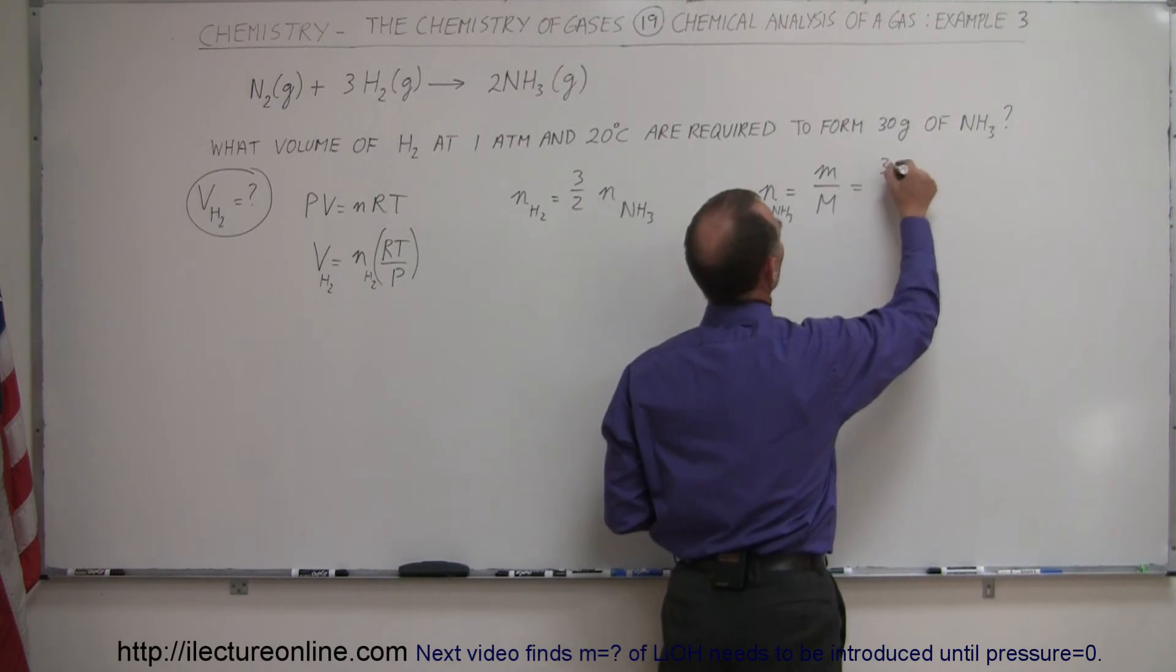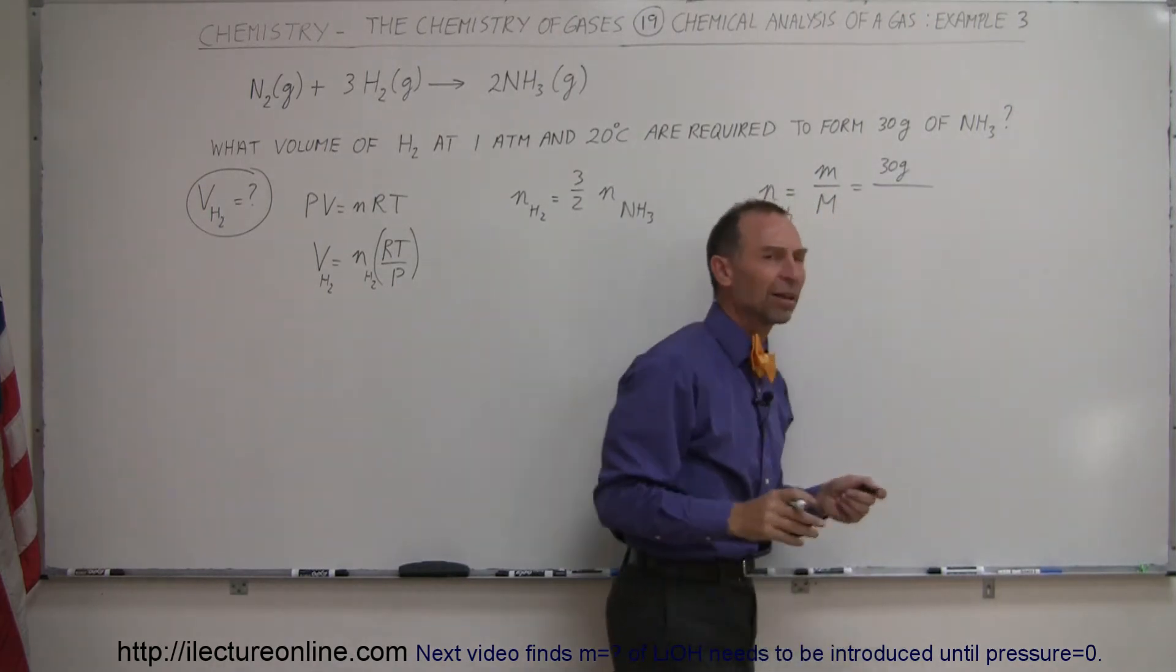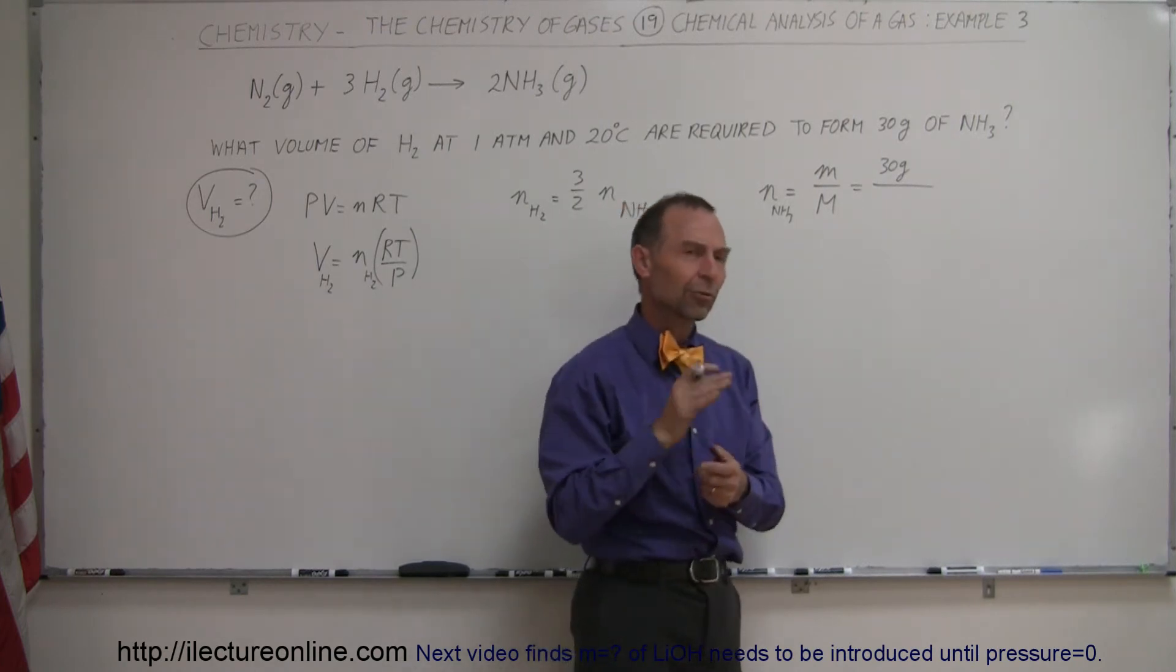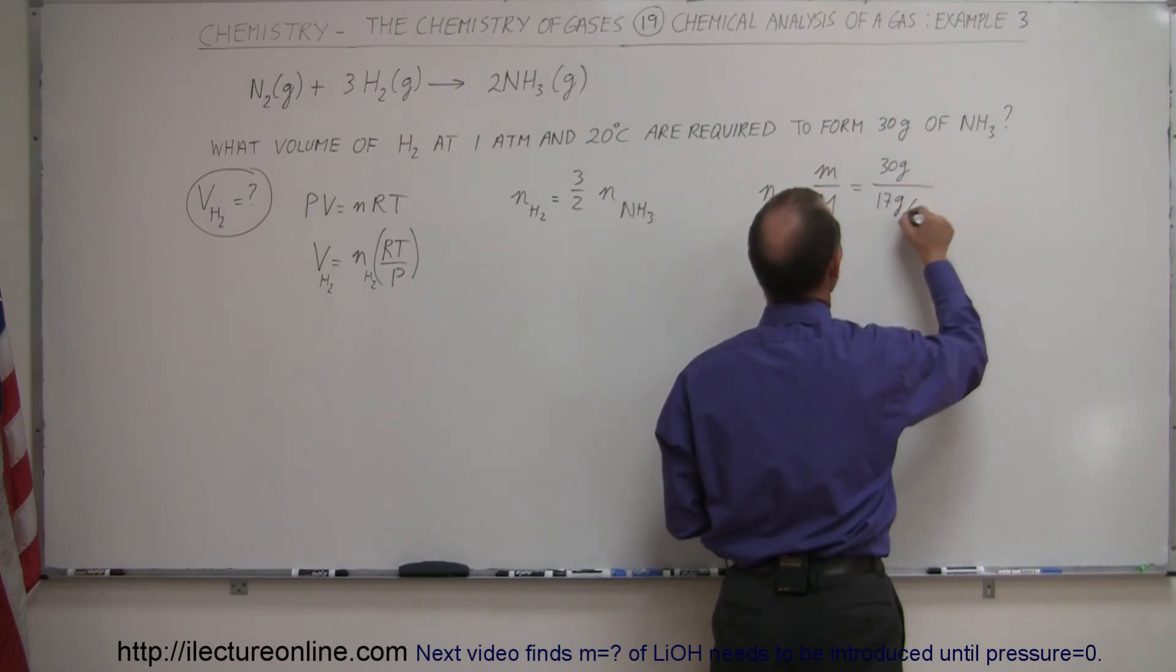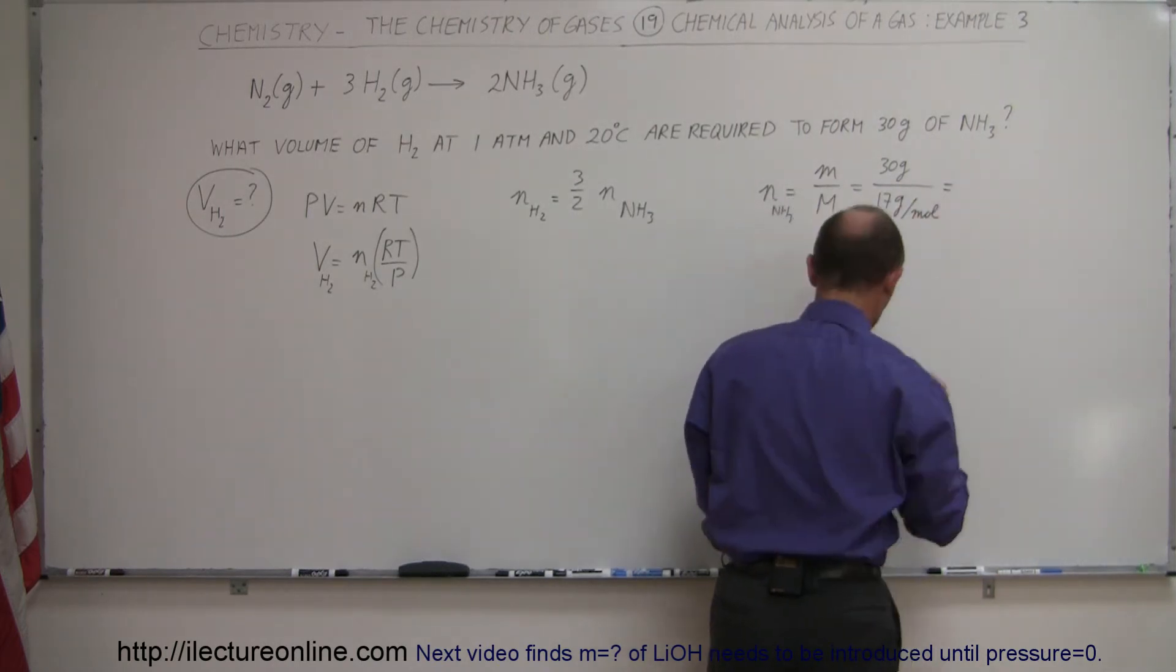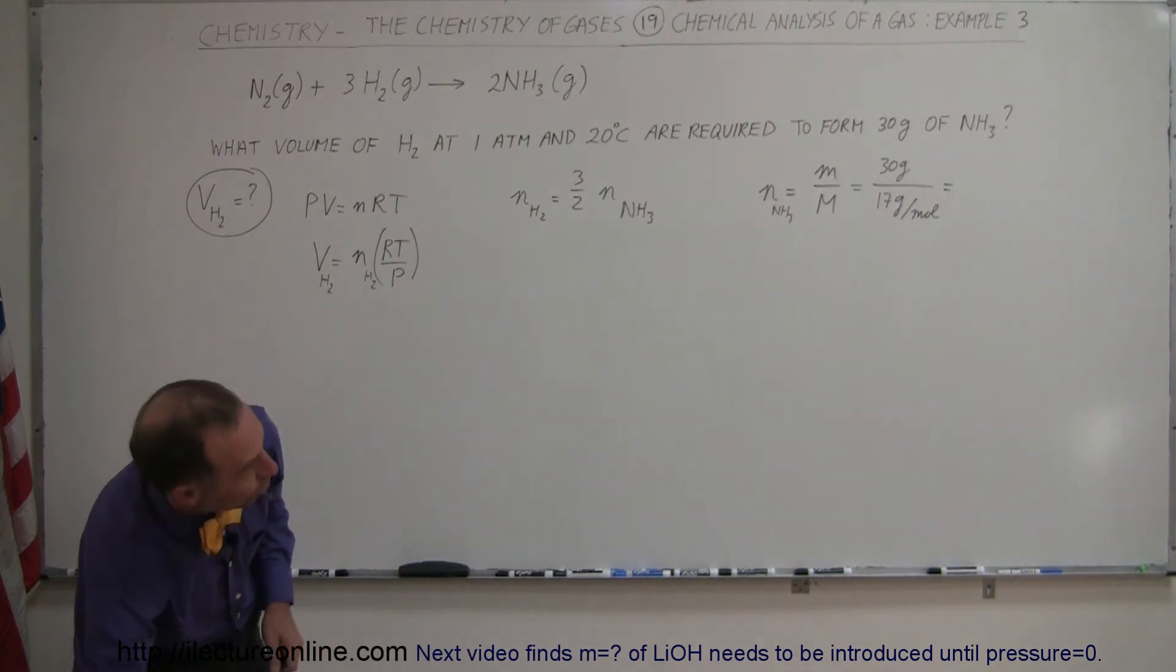The mass, 30 grams. The molar mass of ammonia. Well nitrogen has a molar mass of 14 grams, hydrogen of 3 grams. 14 plus 3 is 17 grams. So we have 17 grams per mole. And that will give us the number of moles and that will give us the number of moles of the ammonia produced.